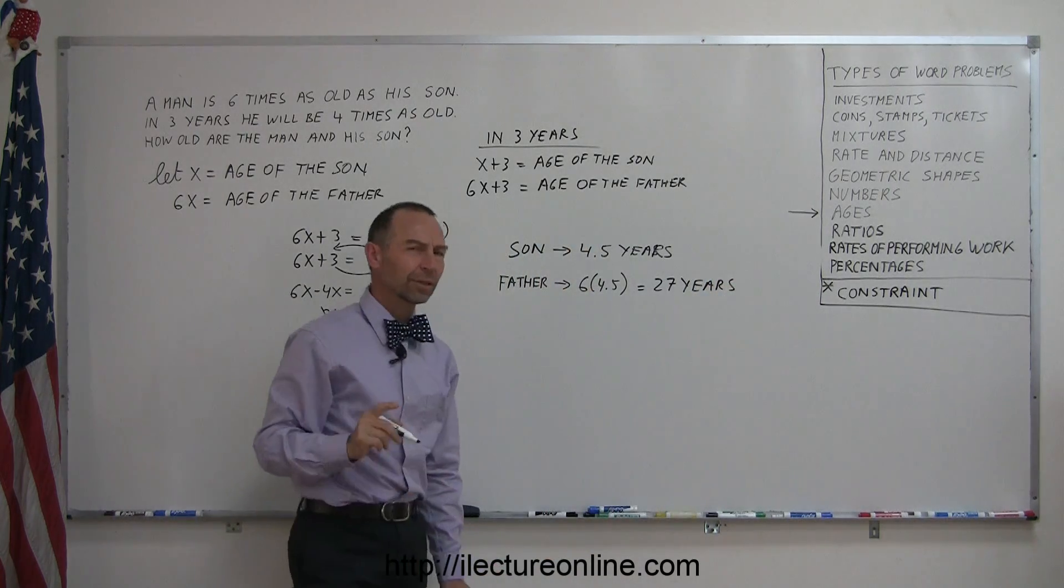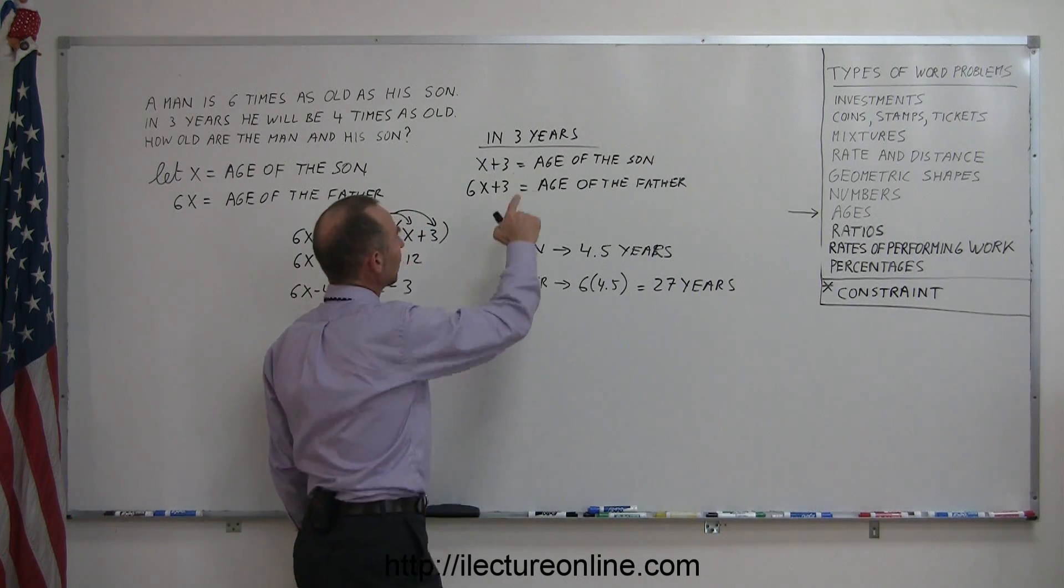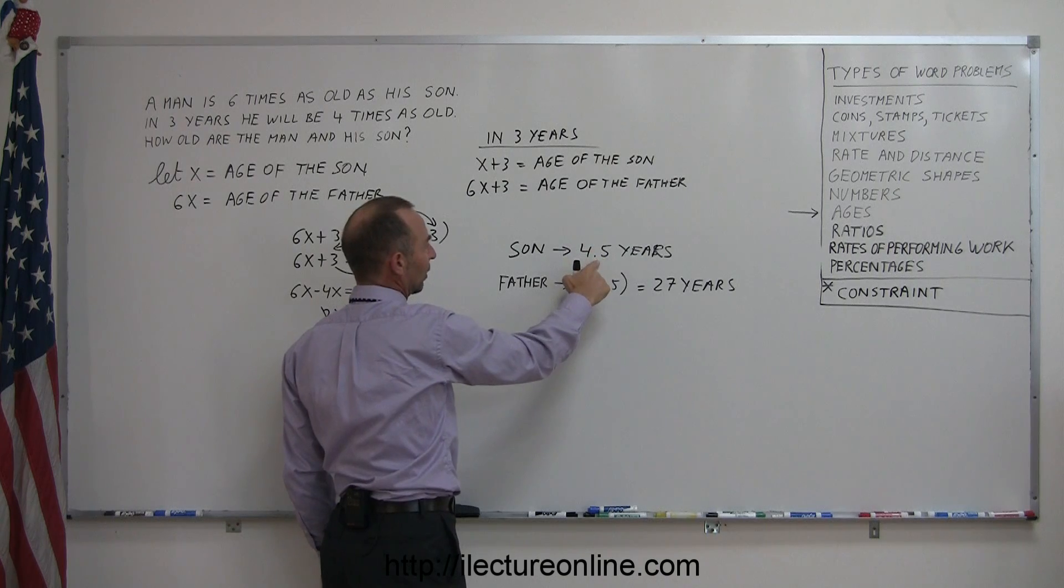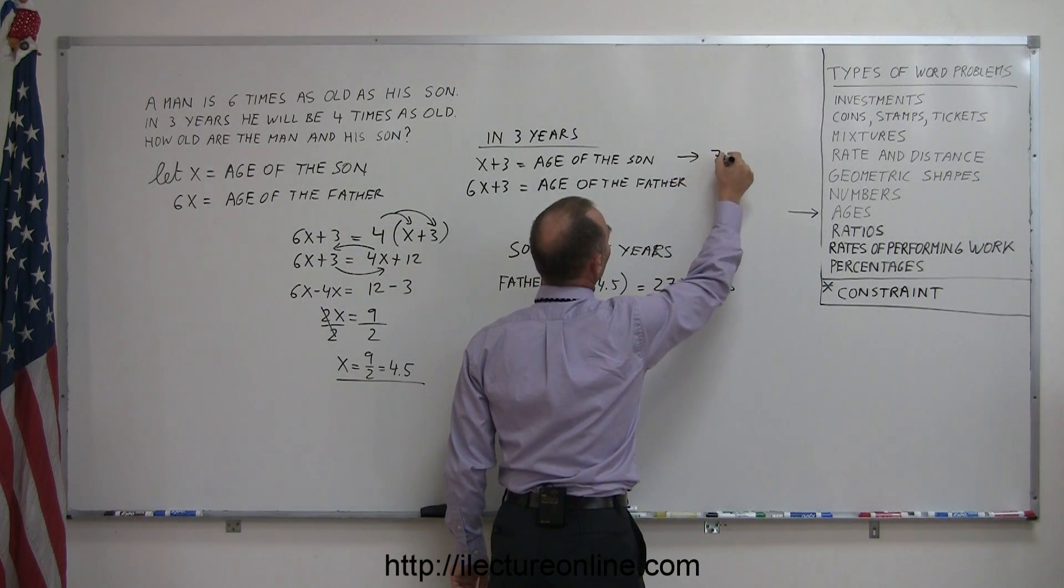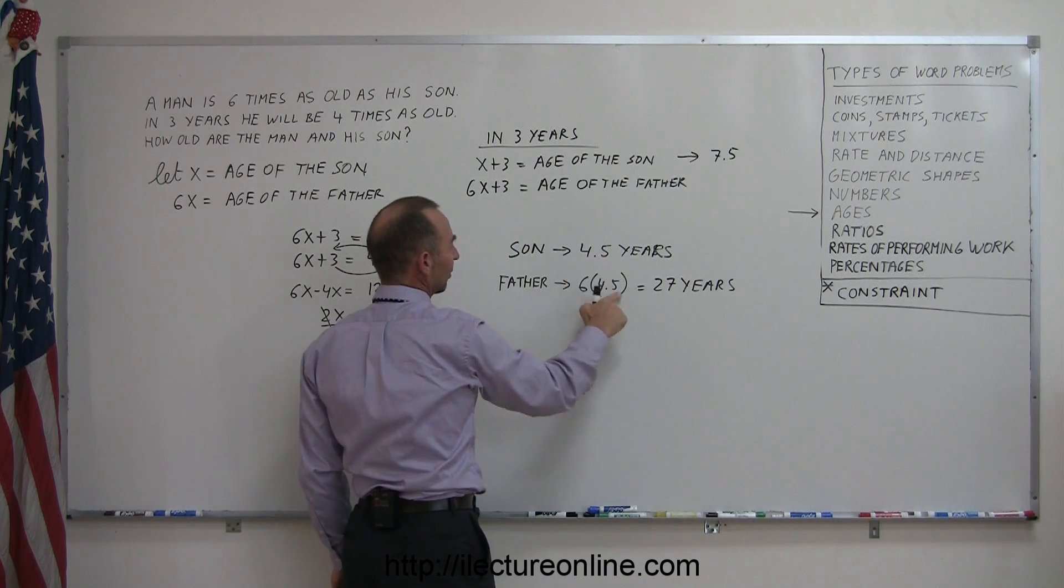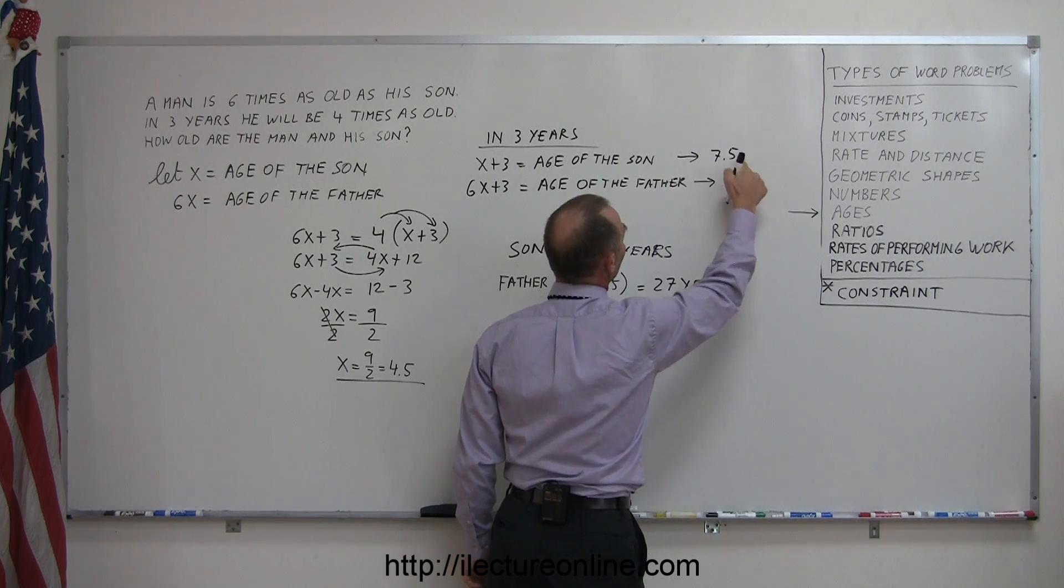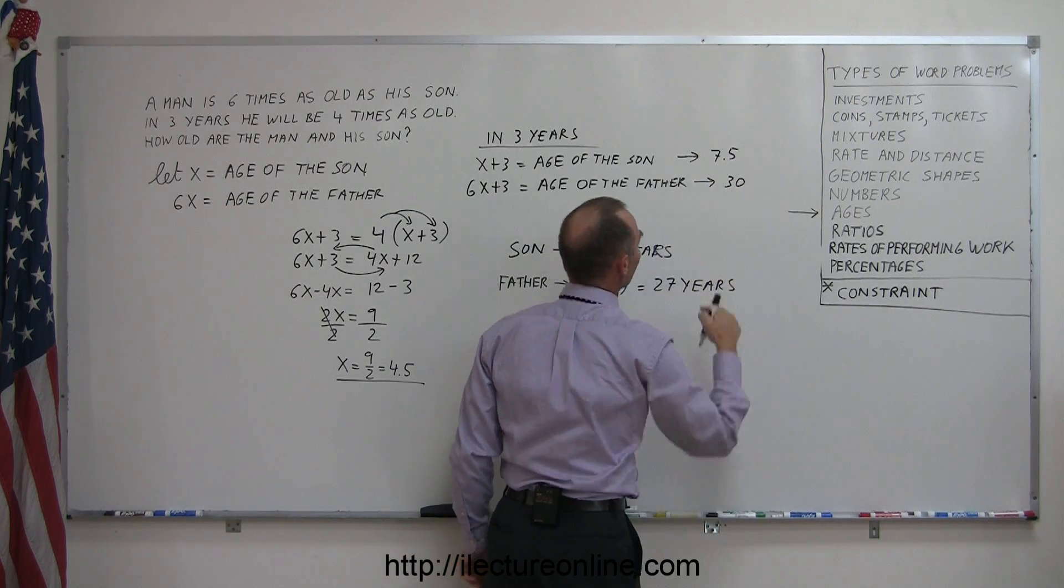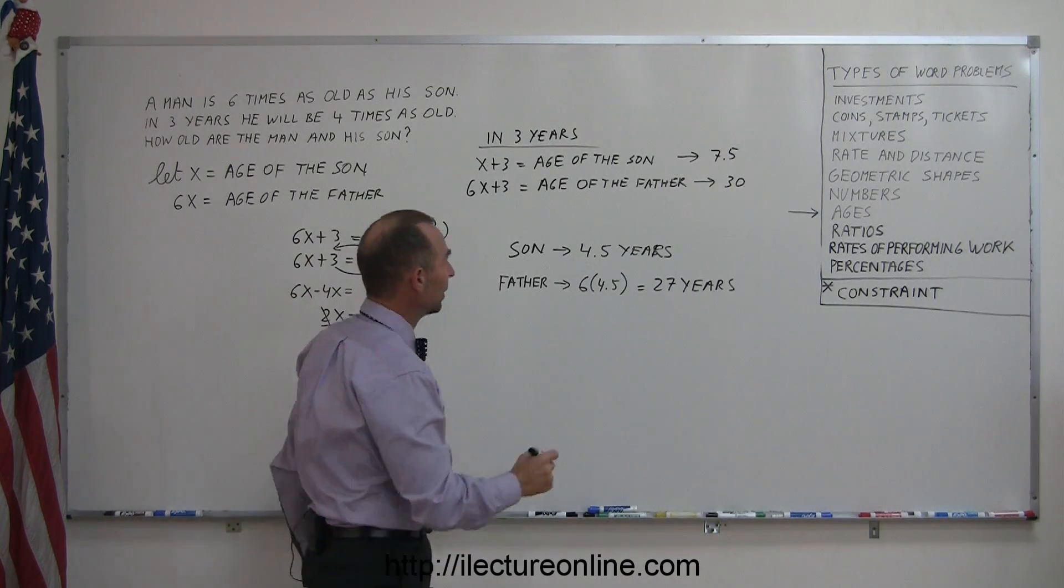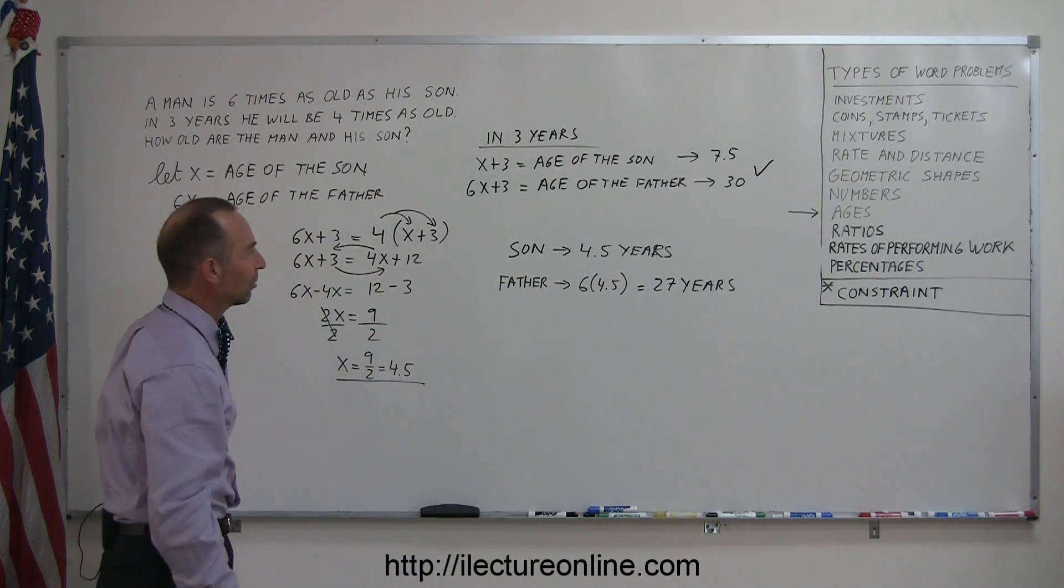Just to make sure we did this correctly, let's see if that still works for 3 years in the future. So 3 years in the future, the son's age will be x plus 3, which is 4.5 plus 3, so that would be 7.5 years old. And the father's age, which is 27 plus 3, that would be 30. Is 7.5 one-fourth of 30? Or is 30 four times 7.5? And it certainly is, so we did it correctly. That's another good example of how you work with ages.